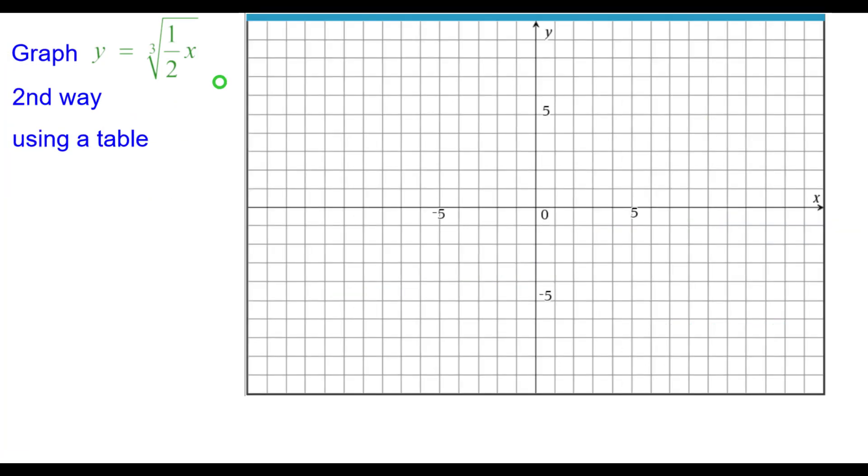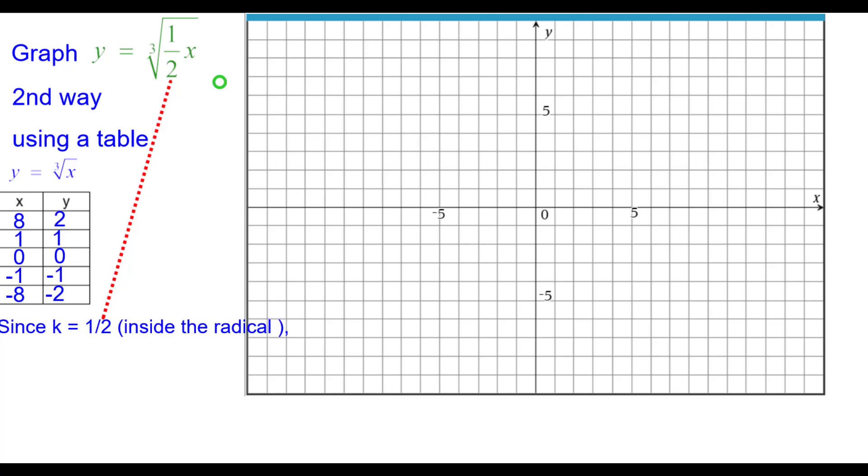Second way using a table. This is our normal cube root table. And since k equals a half inside the radical, the horizontal dilation factor is the reciprocal of a half which is two.